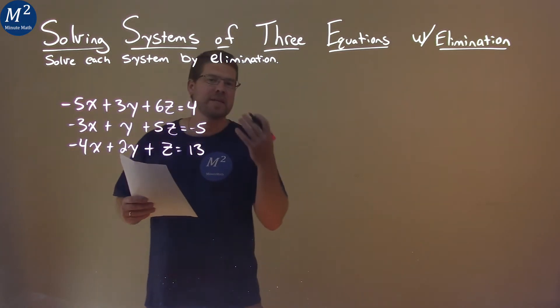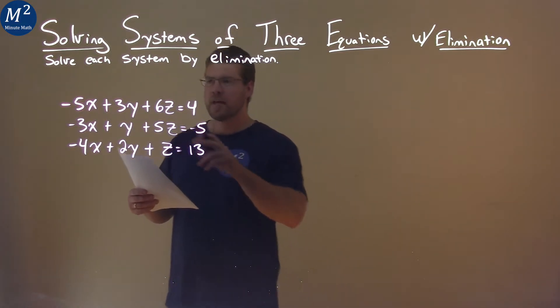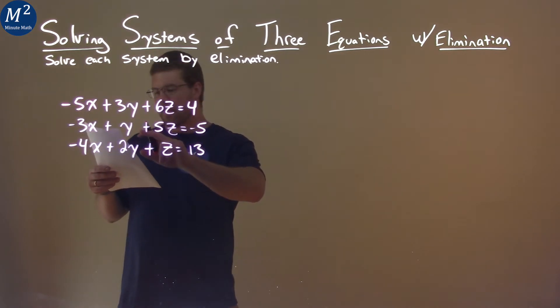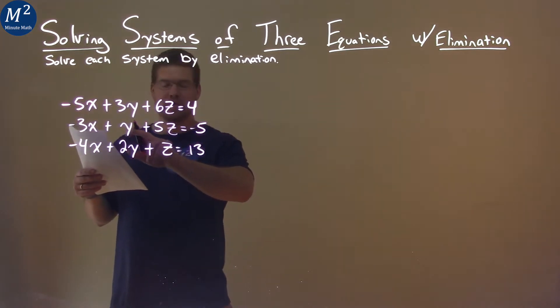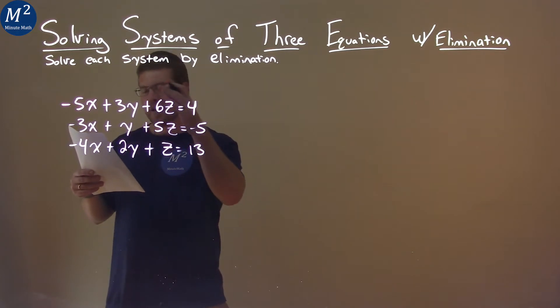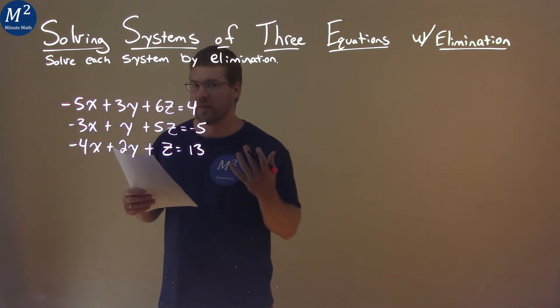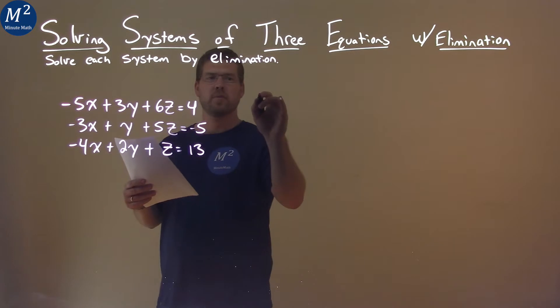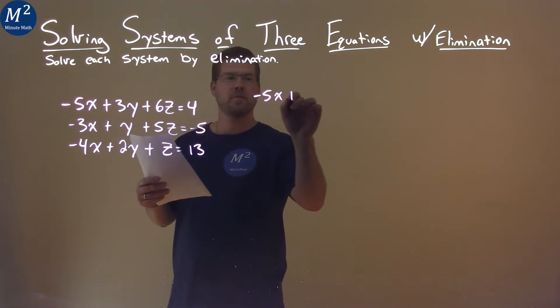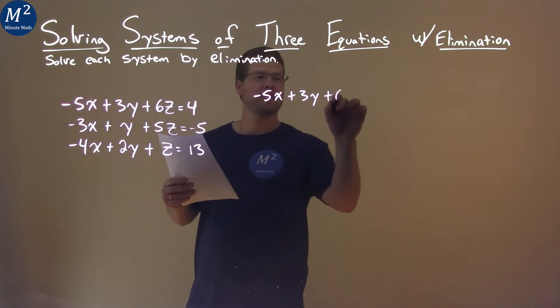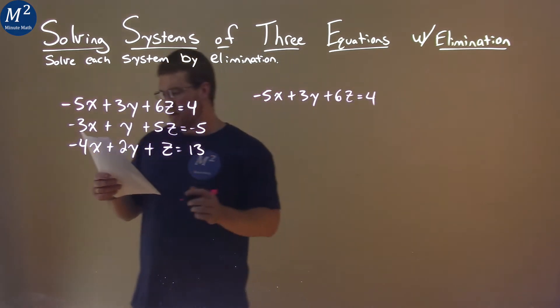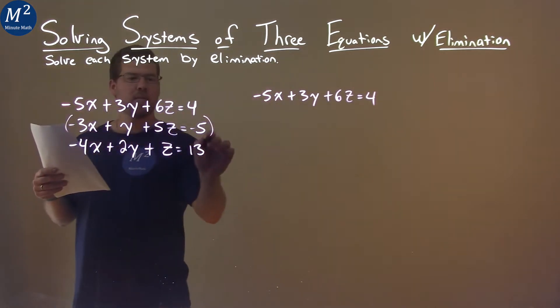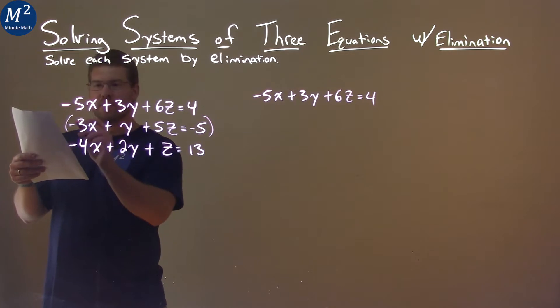The goal is to try to eliminate a variable. If we take our first equation, we see there's 3y here. If I have 3y in the second equation, we can subtract it and the y's will get canceled. So let's rewrite the first equation. Negative 5x plus 3y plus 6z equals 4. The second equation, I'm going to multiply the whole thing by a positive 3.